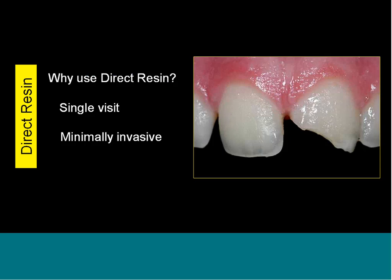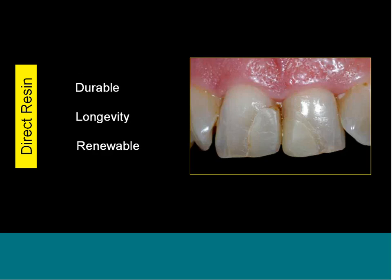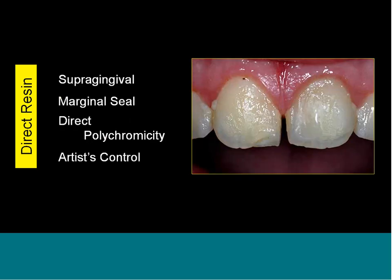Direct composite is minimally invasive, which is huge for patients these days. Patients don't want their teeth prepped or cut down. If we can add rather than subtract, that makes the patient much happier. Composites are durable, with proven longevity, and they're renewable — if a patient chips a piece off, has an accident, or gets some staining, we can renew the restoration rather than totally replace it. The margins are supragingival, which makes things easier for patients with less-than-optimal plaque control and helps prevent recurrent caries. There's marginal seal because it's adhesive dentistry, direct color control by the dentist, and we're able to impart lifelike qualities — they're not monochromatic.